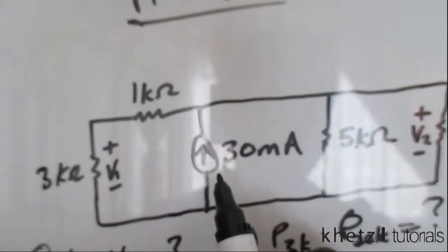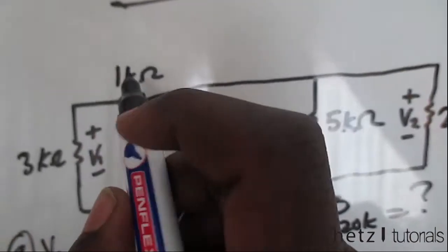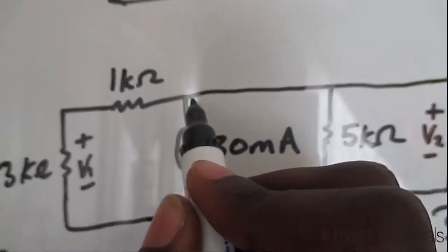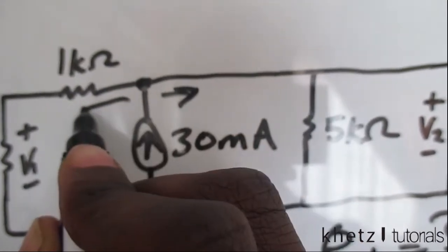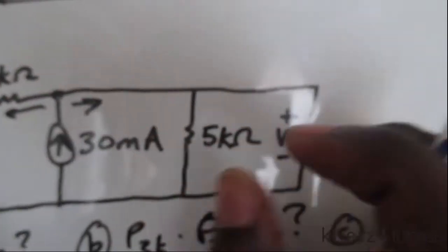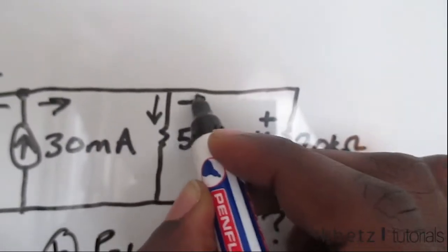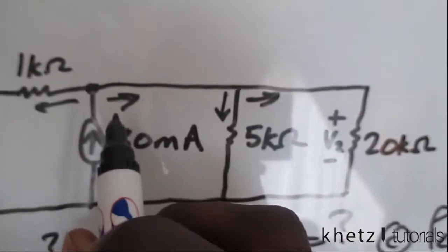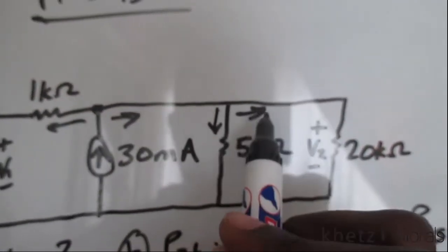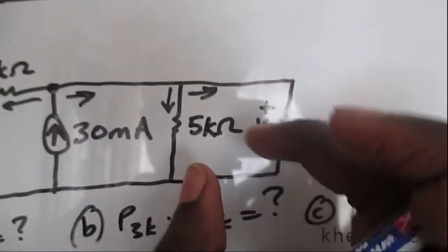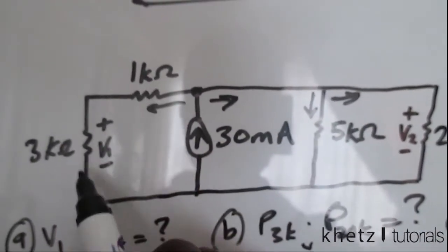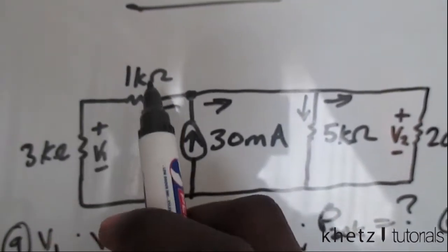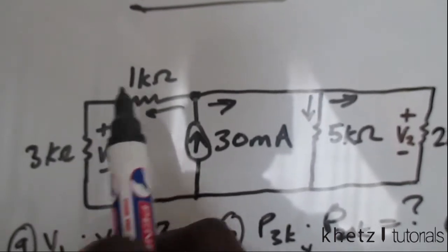We have a current source, and the current goes up. At this node it splits into some current going one way and some current going the other way. We're going to combine two resistors into one — they're in series, so they have the same current. This amounts to 4k ohms, which is 1k plus 3k.